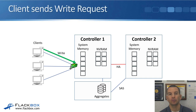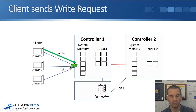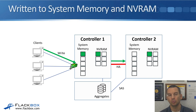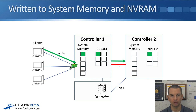Starting off with a client on the left sending in a write request to write some data — we'll call it green data — to Aggregate 1. What happens is it gets written to system memory on Controller 1, and it also gets written to NVRAM on Controller 1 and Controller 2. So system memory just on Controller 1, NVRAM on both controllers.